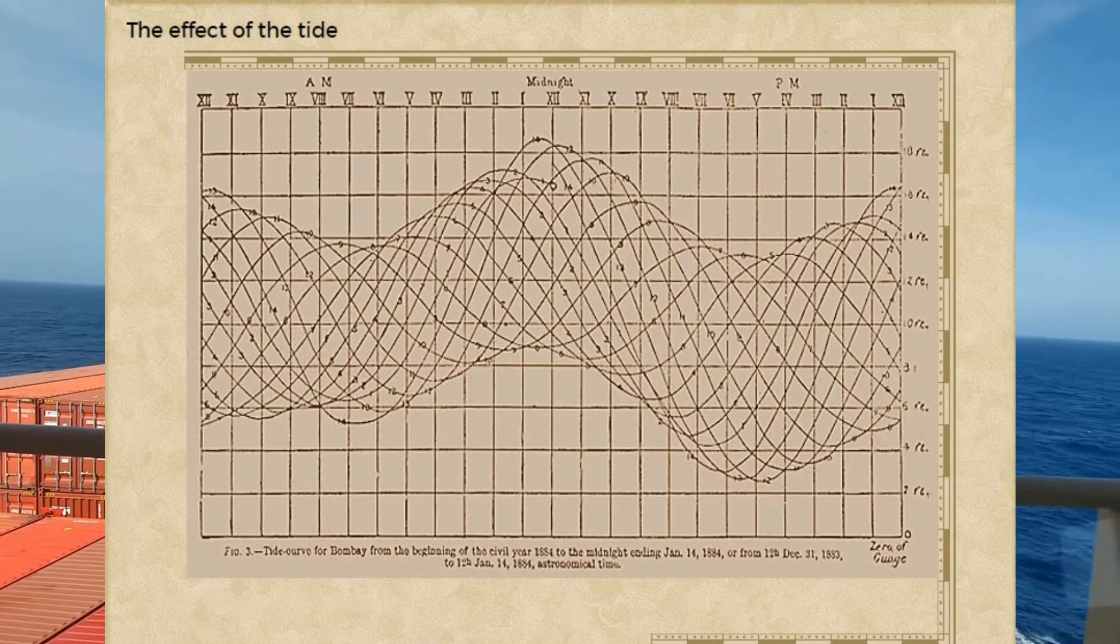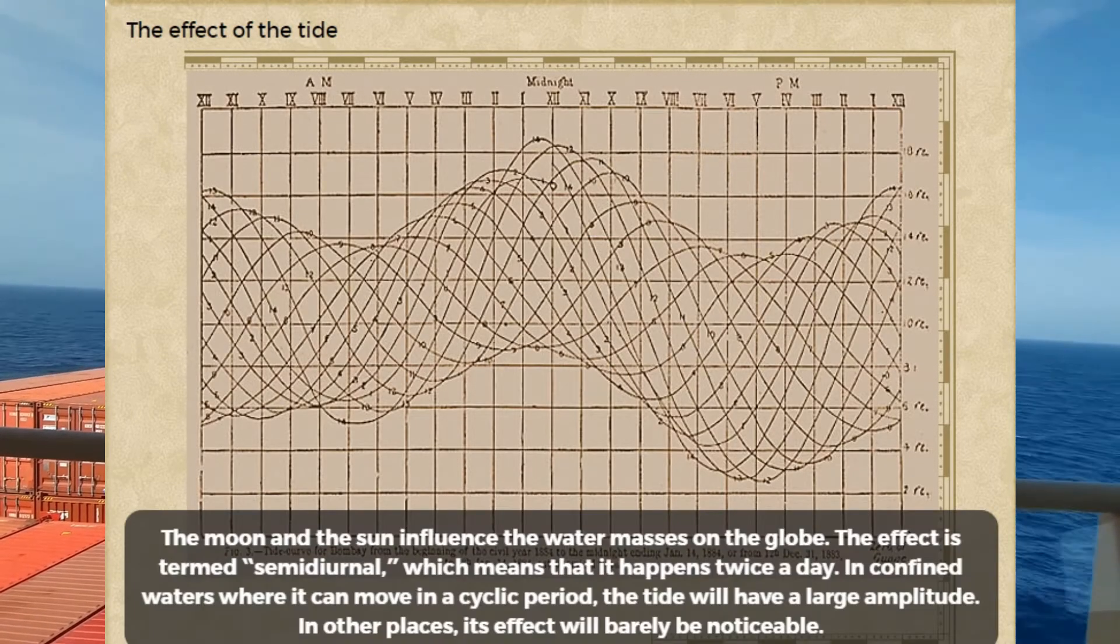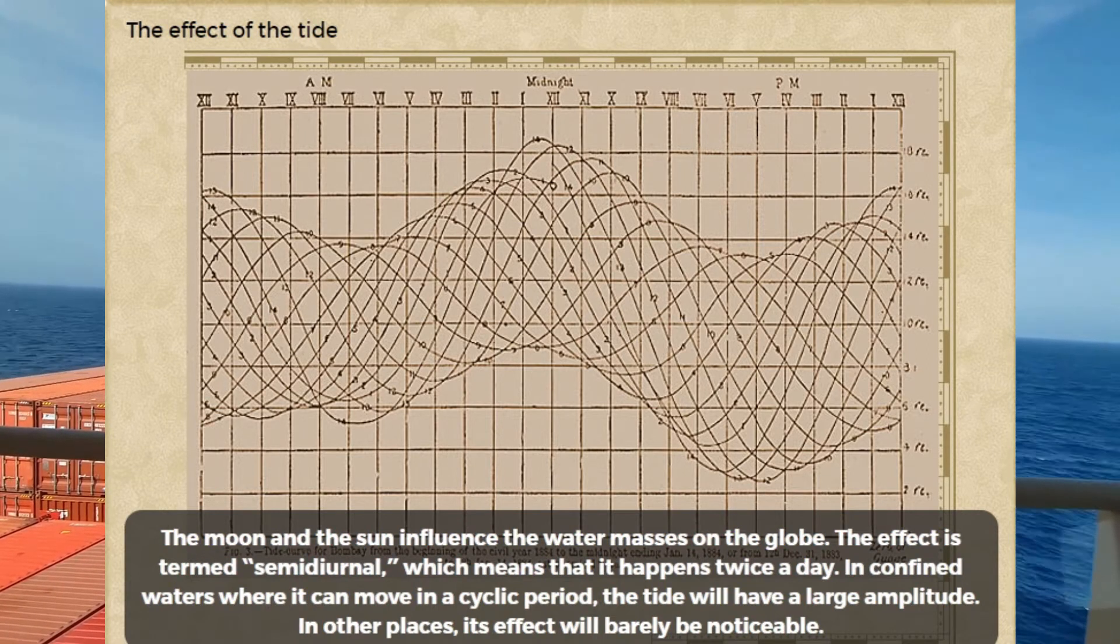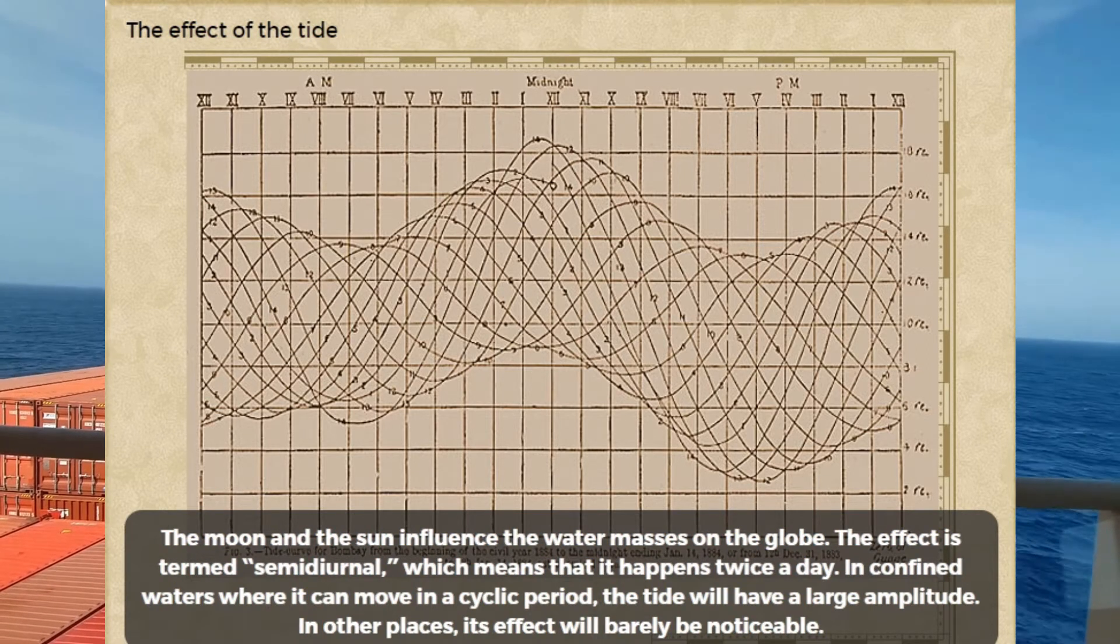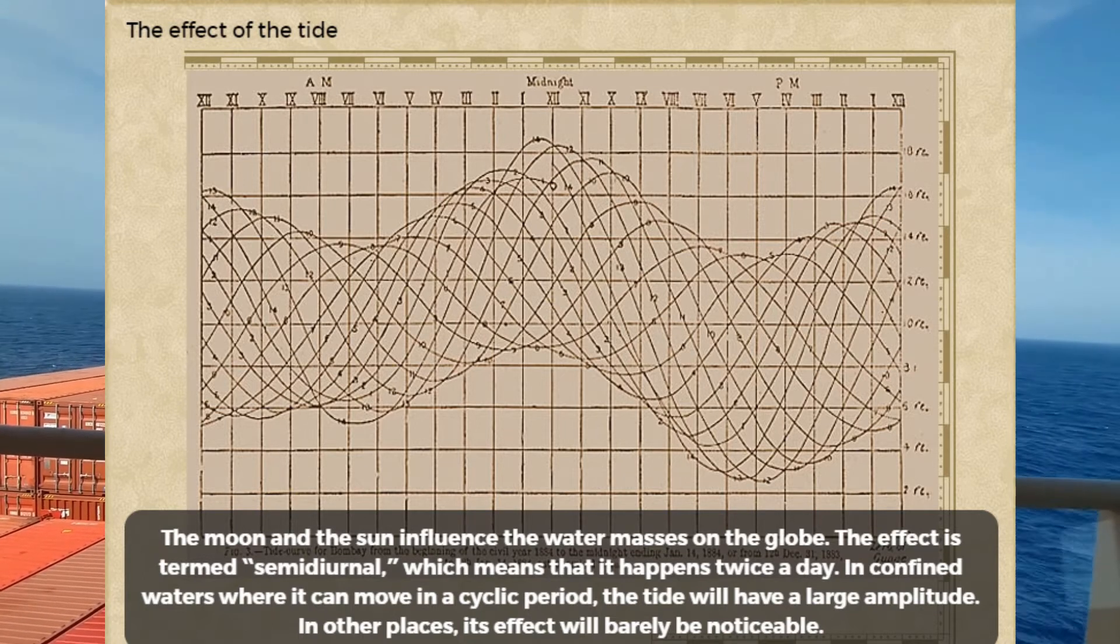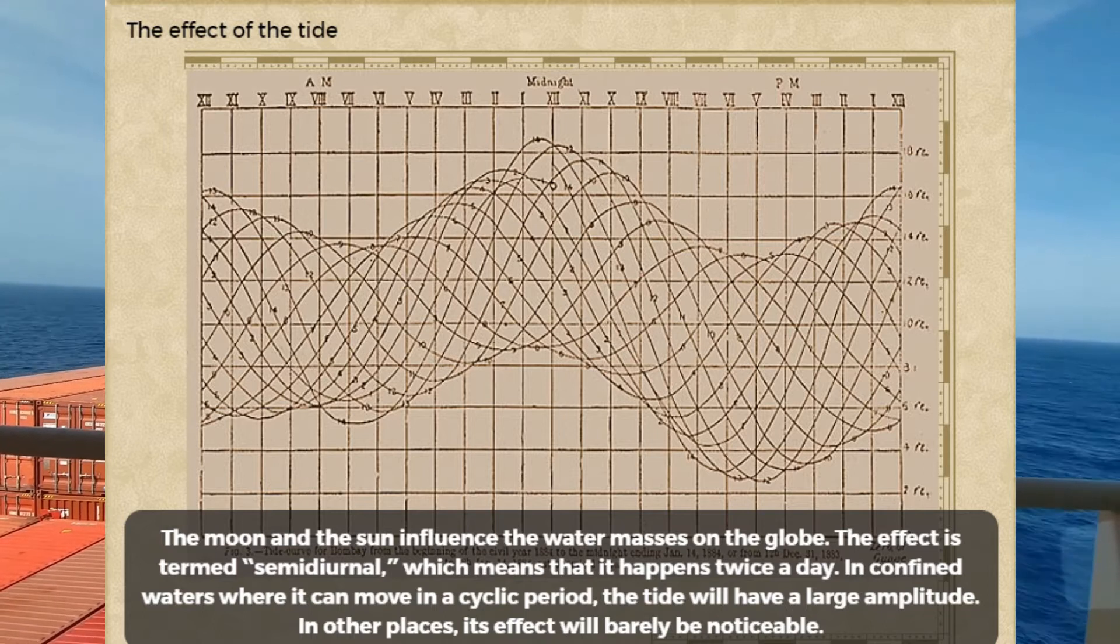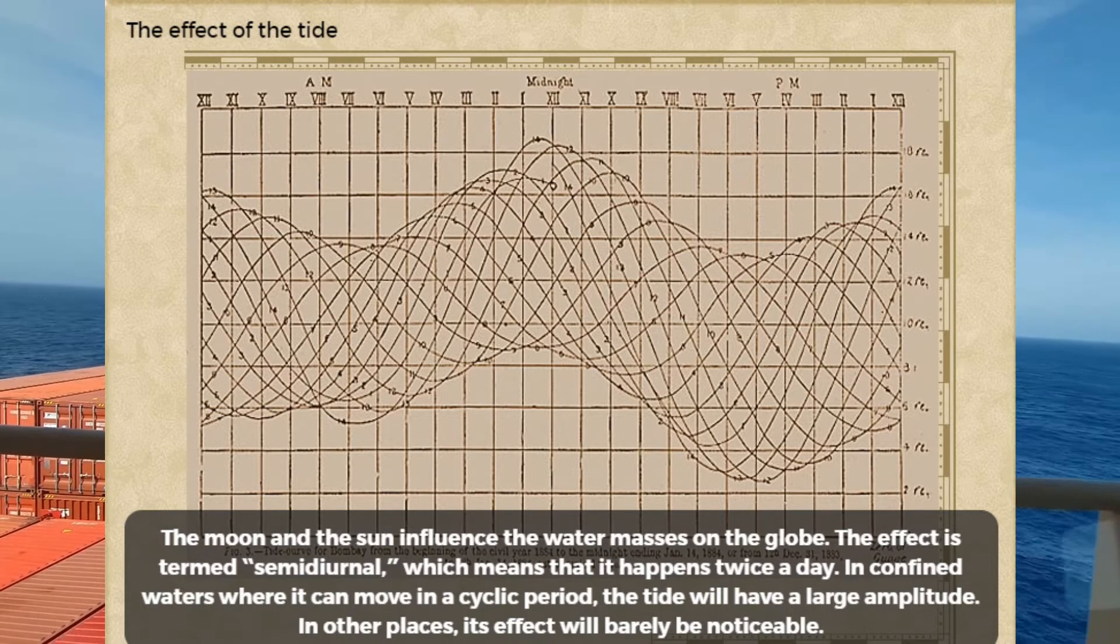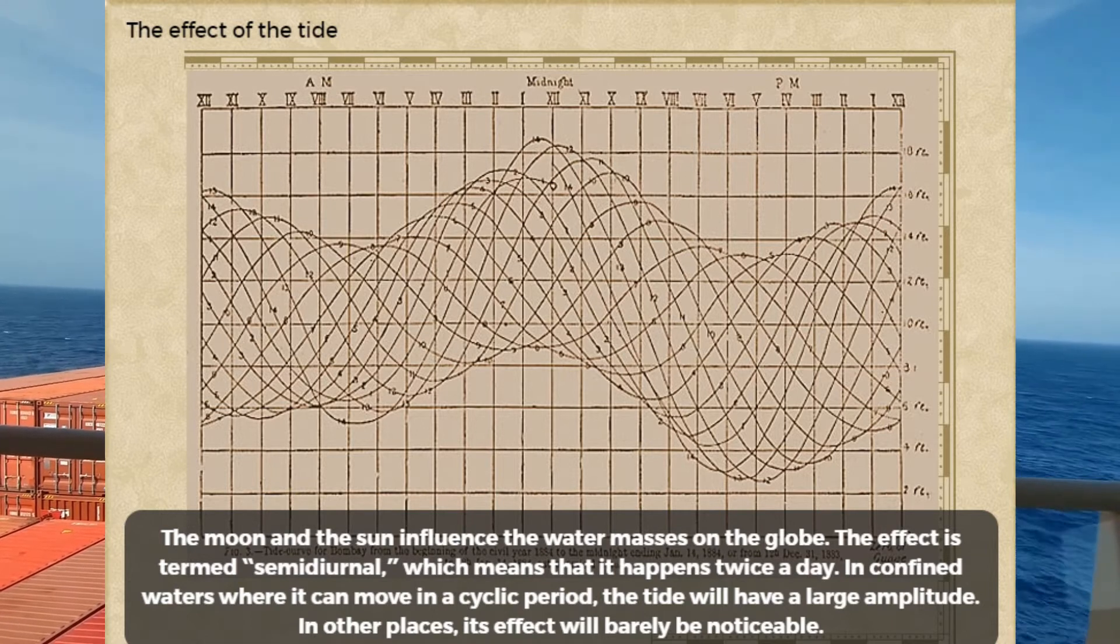The Moon and the Sun influence the water masses on the globe. The effect is termed semi-diurnal, which means that it happens twice a day. In confined waters where it can move in a cyclic period, the tide will have a large amplitude.